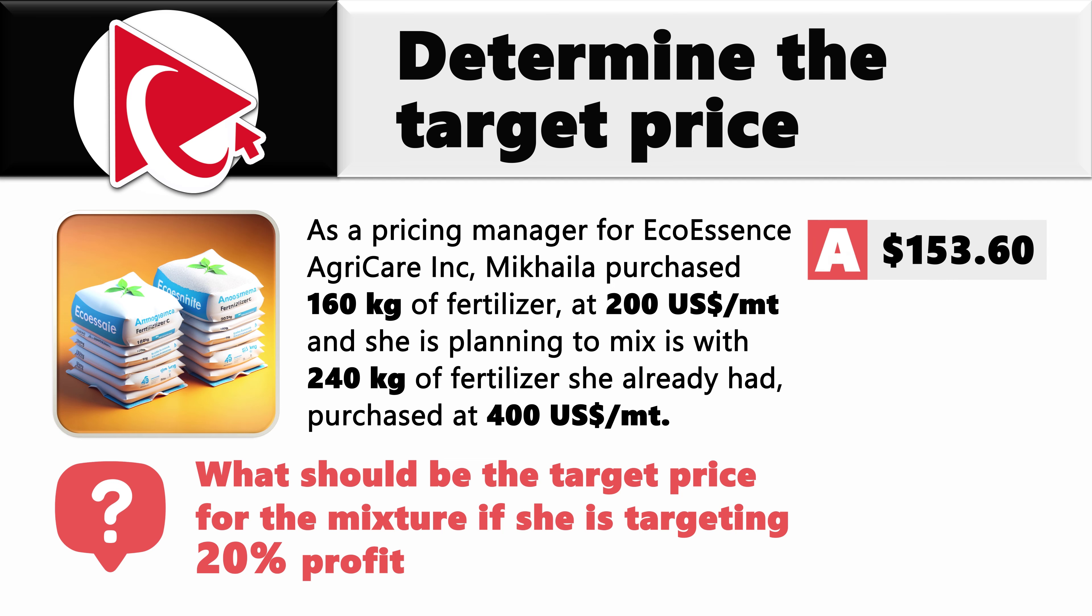What should be the target price for the mixture if she is targeting 20% profit? You need to calculate and select the final price out of four possible choices. Choice A: $153.60. Choice B: $156.20. Choice C: $164.80. And last but not least, choice D: $172.40.